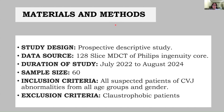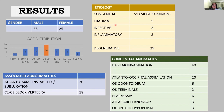Our study was a prospective descriptive study with a duration of approximately two years. The patients were scanned using a 128-slice MDCT scanner, and the sample size was 60 patients — all suspected cases of CVJ abnormalities from all age groups and genders.